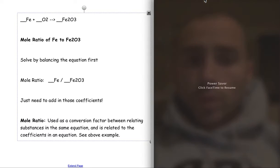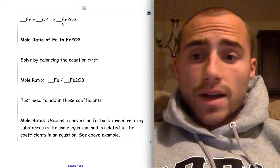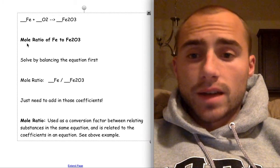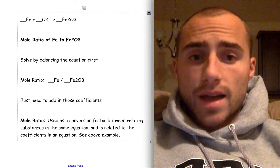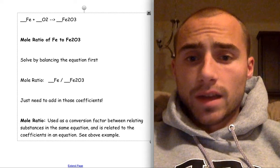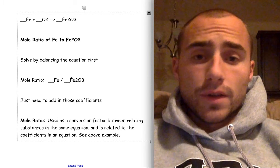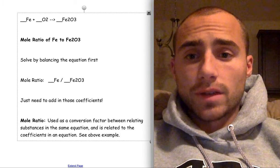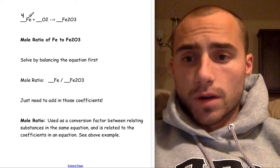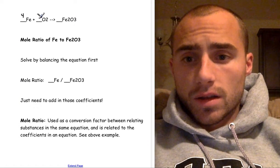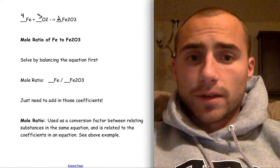Okay, mole ratios. Mole ratios are important. This would be an example right here. We have iron plus oxygen produces iron oxide. If you are being asked to have the mole ratio of iron to iron oxide, all that is is a fraction with the correct coefficients in front of each element. So all you would have to do is balance the equation in this situation. The equation would be balanced with a 4, a 3, and a 2. Just like that. That would be the balanced equation.